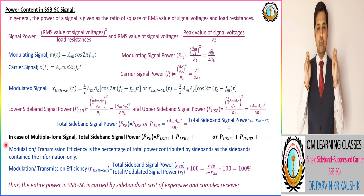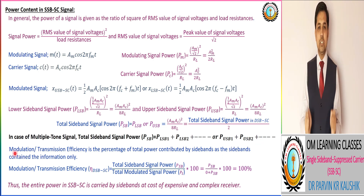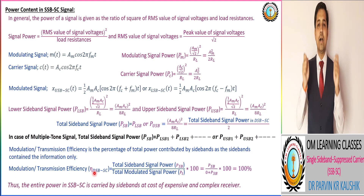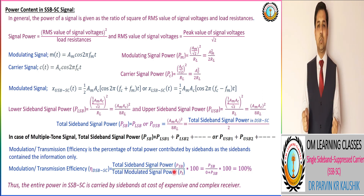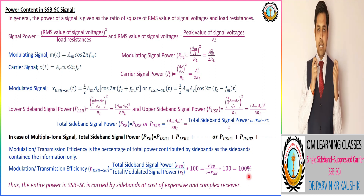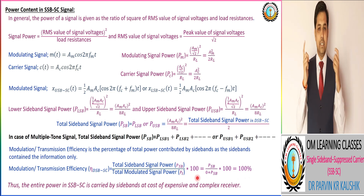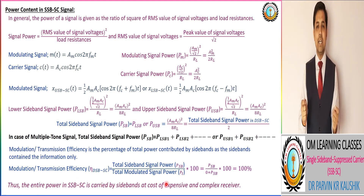For a multi-tone signal, the total sideband signal power is equivalent to the sum of all lower sideband powers or the sum of all upper sideband powers. Another important point: the modulation or transmission efficiency is also 100% in SSB-SC signal, similar to DSB-SC, because the total sideband power is equivalent to the total modulating signal power. The entire signal power in SSB-SC is carried by the sideband.